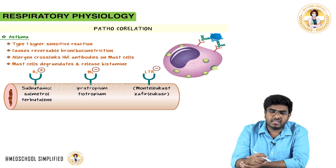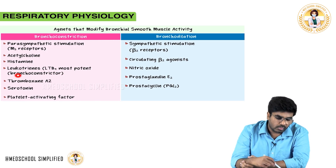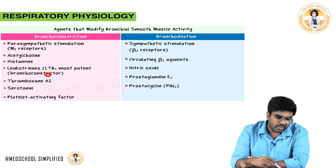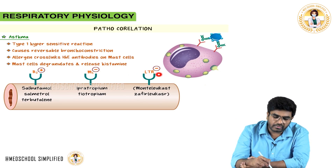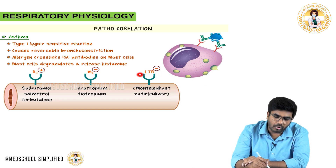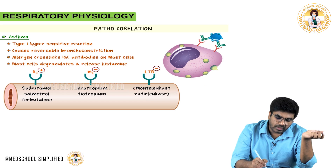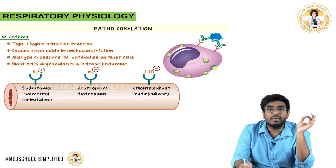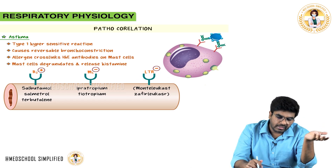Leukotriene B4 is the most potent bronchoconstrictor, so leukotriene receptors on bronchial smooth muscles must be blocked. Leukotriene receptor blockers — montelukast and zafirlukast — block these receptors and cause bronchodilation.